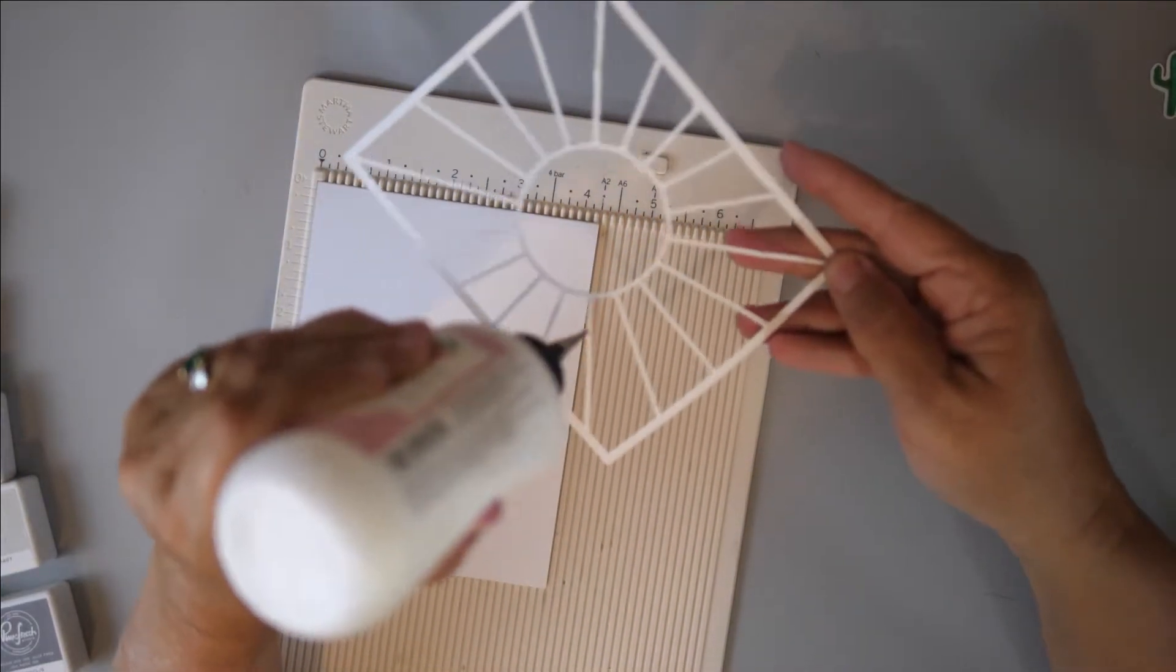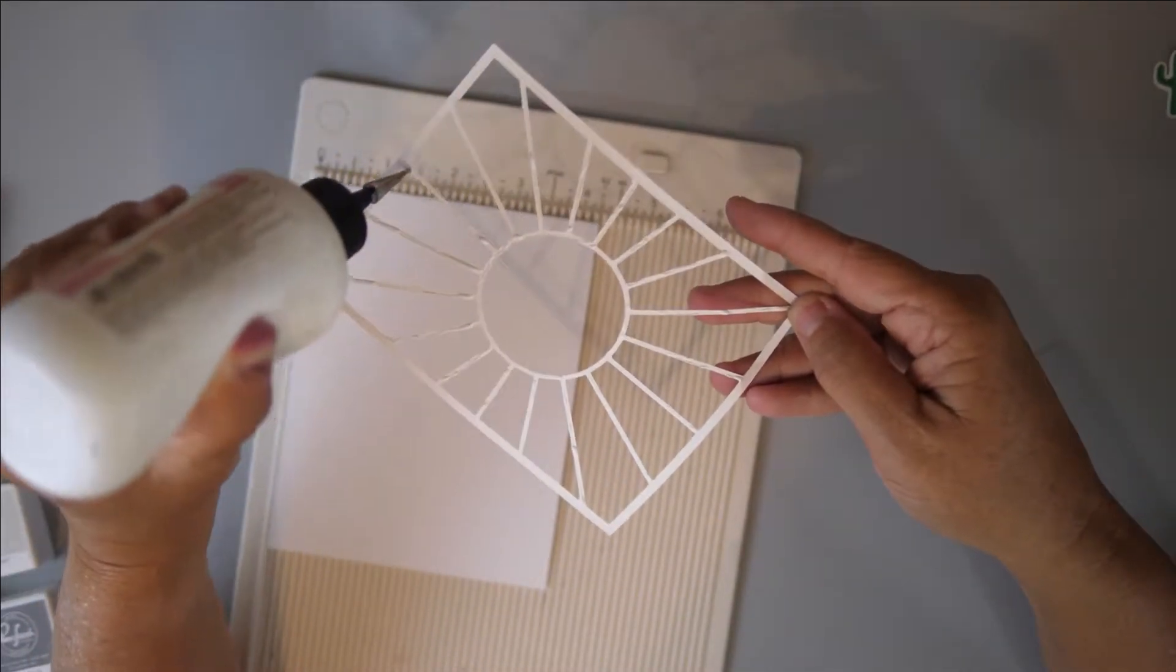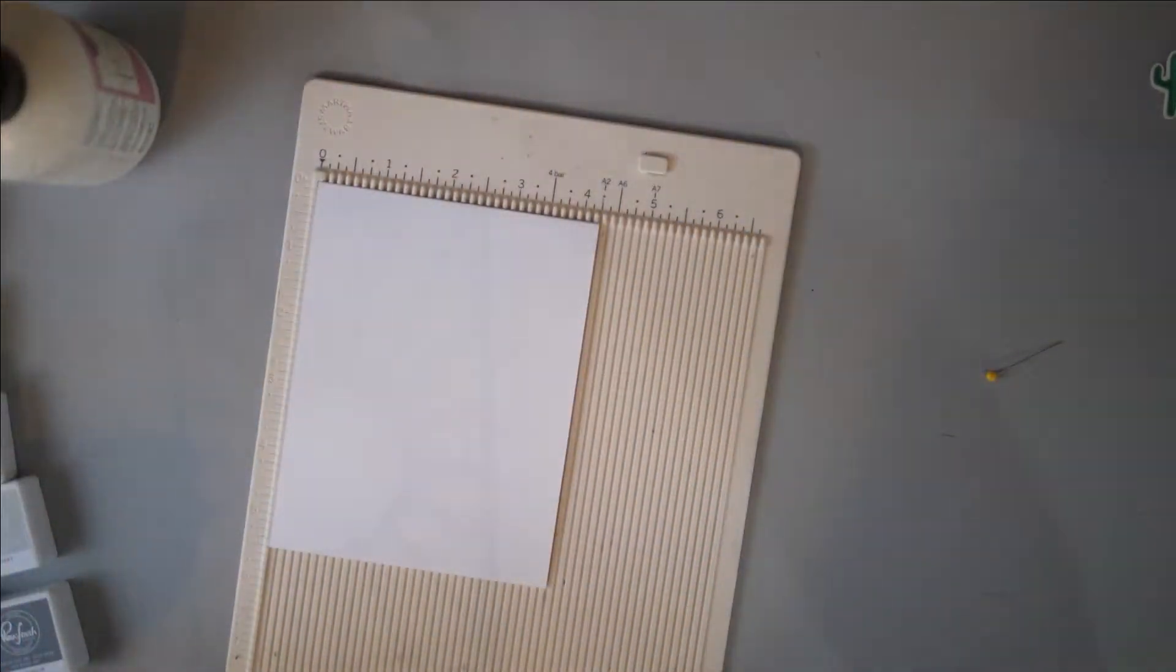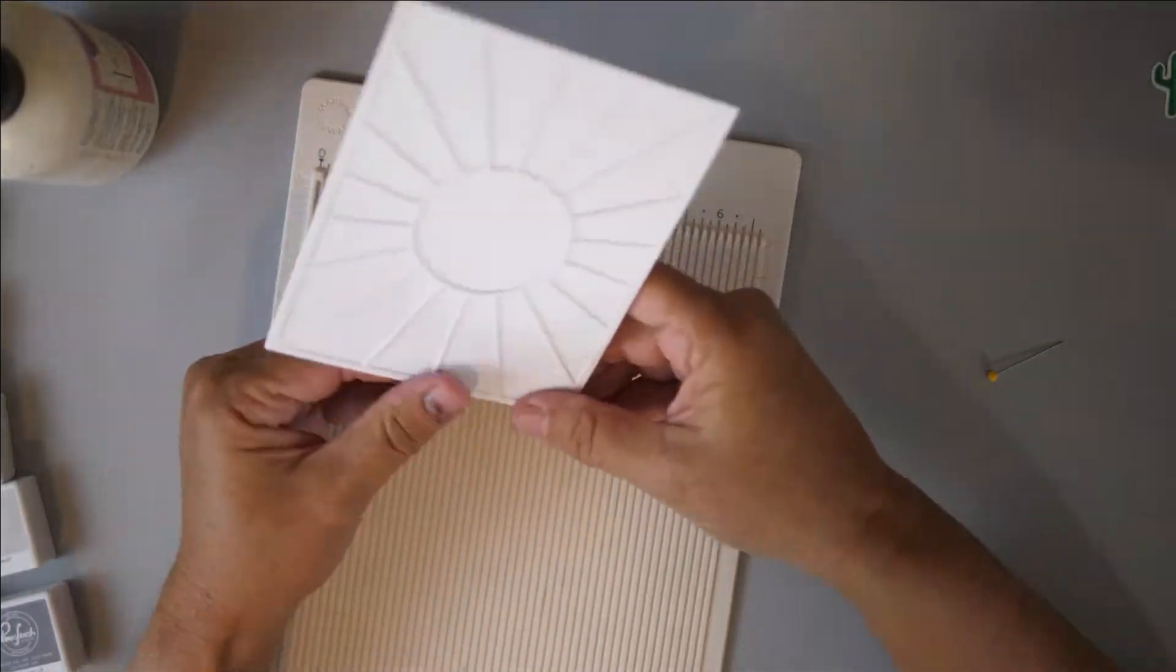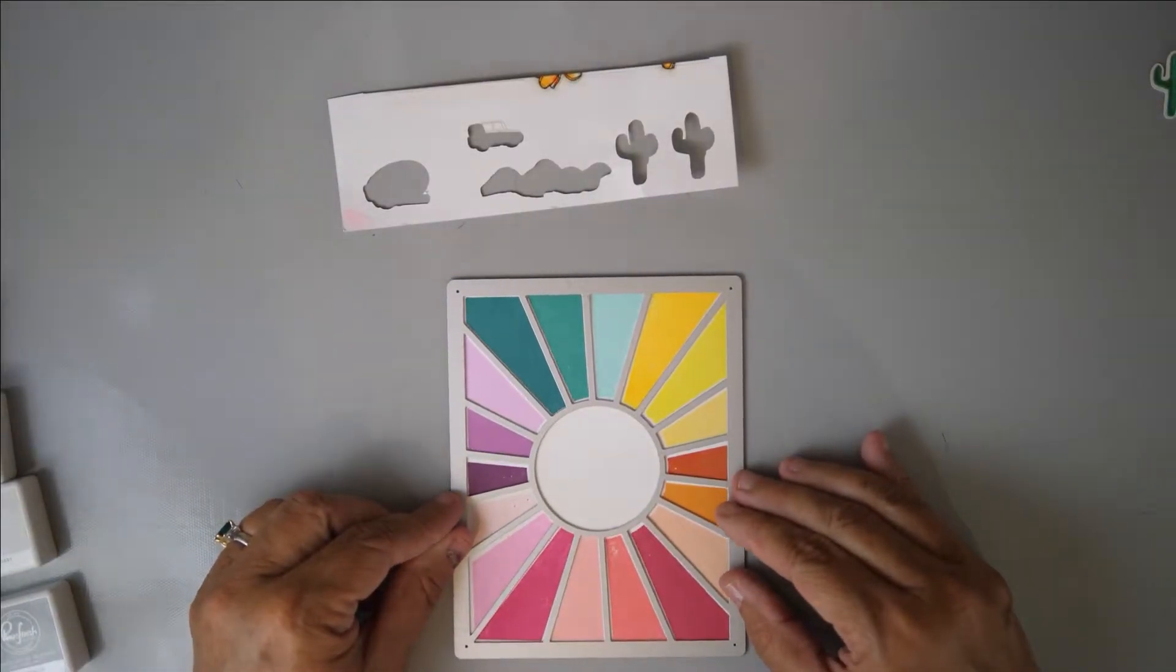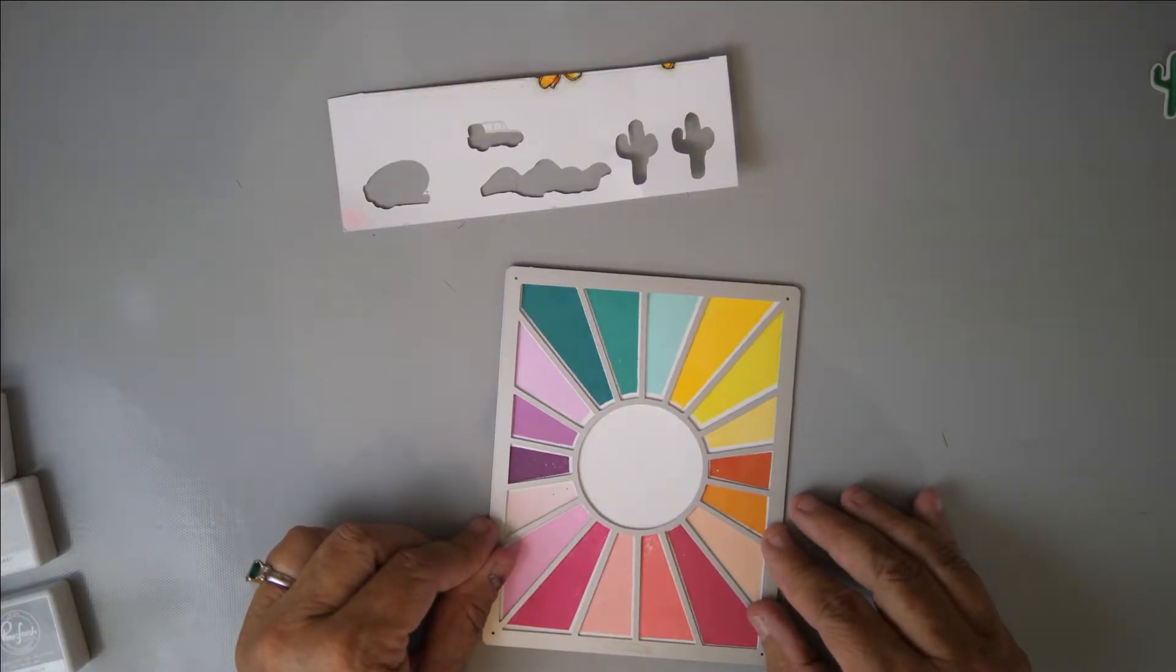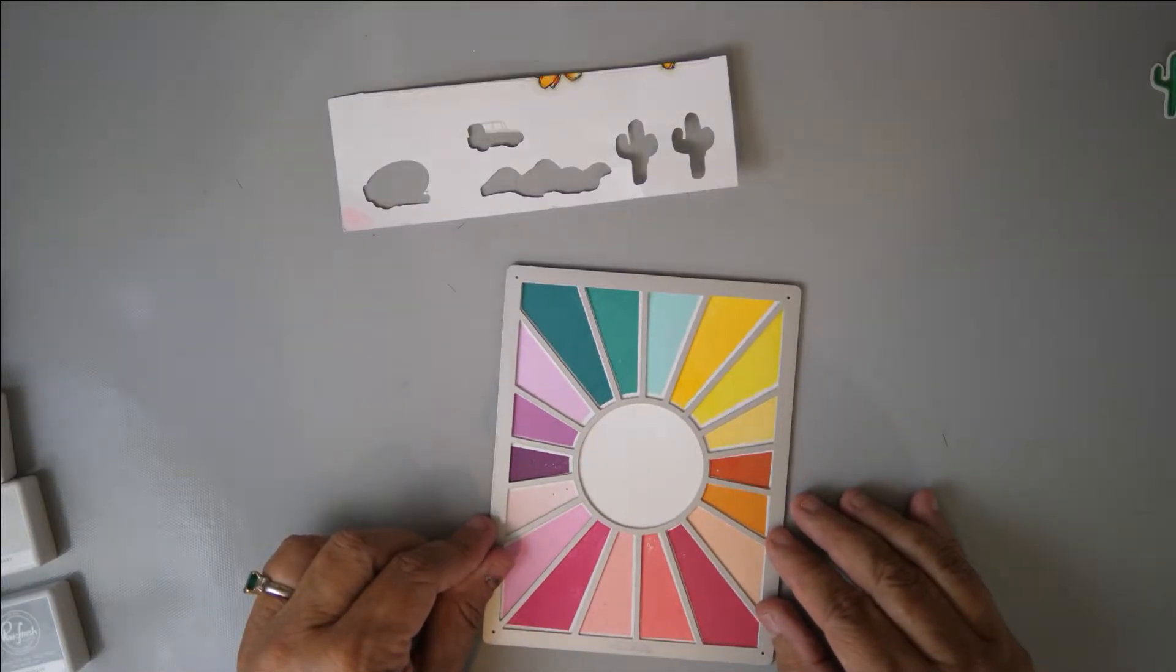That is a piece of Stampin' Up! white whisper white card stock and I believe it's a hundred pound card stock. I'm just going to take a little bit of that art glitter glue put it on the back of my frame and then I am going to line it up onto that card base. Here's where I'm going to go back in and actually tape this down and cut it and then you'll see all the little pieces that come out.